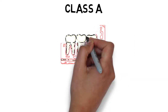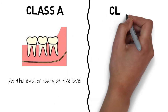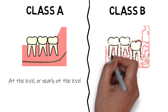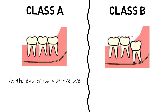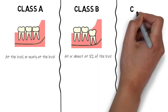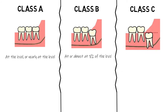In Class A, the occlusal surface of the impacted tooth is at or nearly at the level of the occlusal plane of the adjacent second molar. Class B is when the impacted third molar is between the occlusal plane and the cervical line of the adjacent second molar, meaning the tooth is almost half embedded within the bone. Class C is when the occlusal surface of the third molar is below the cervical line of the second molar, and therefore completely or almost completely embedded within the bone.